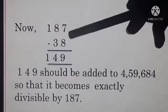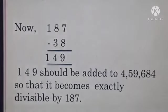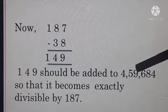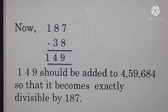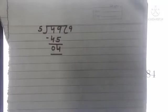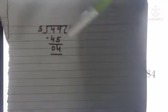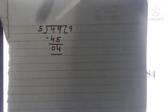Now we subtract remainder from divisor: 187 minus 38 equals 149. If we add 149 to 4,59,684, then it will be exactly divisible by 187.